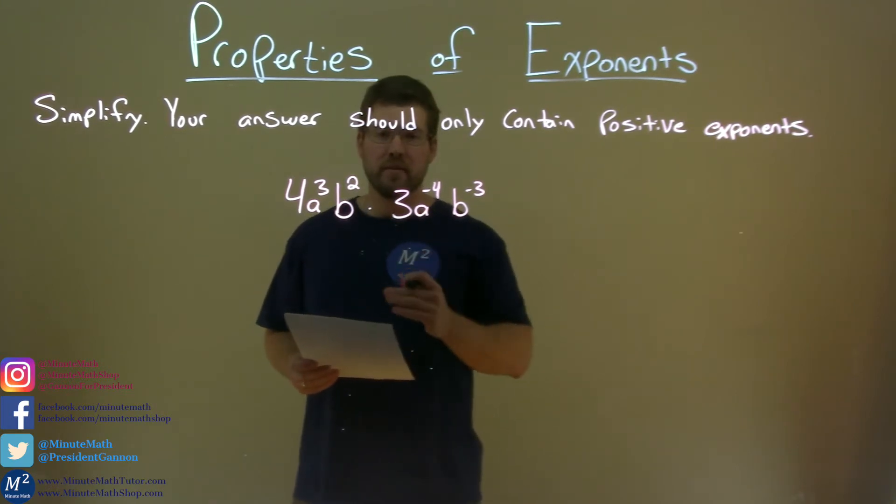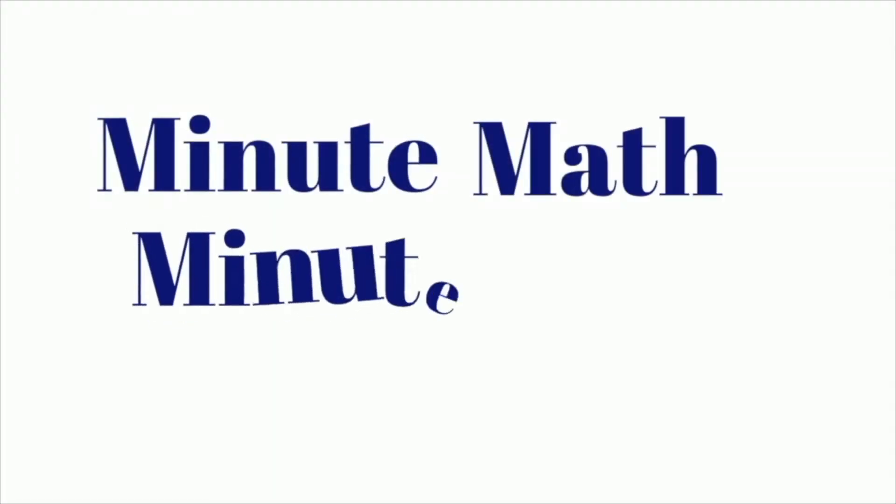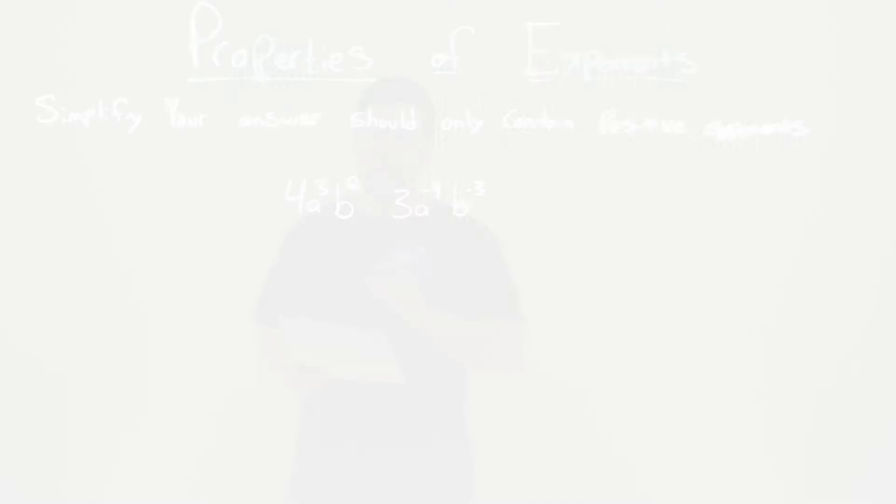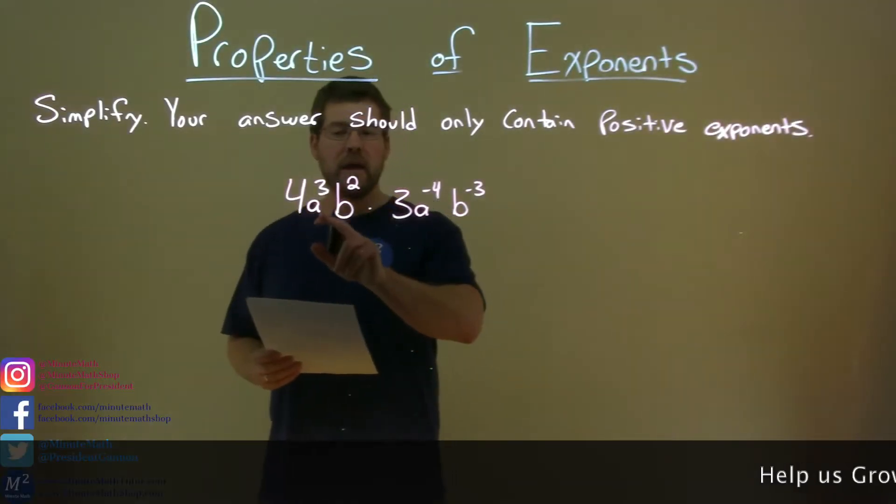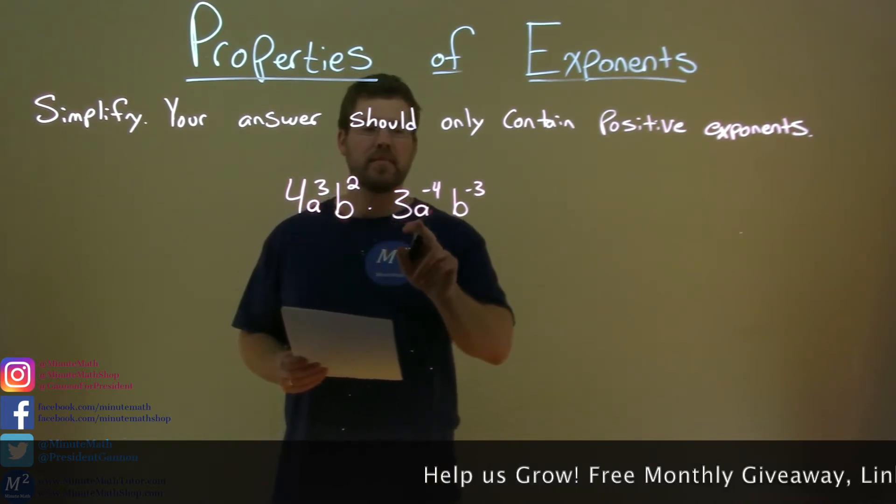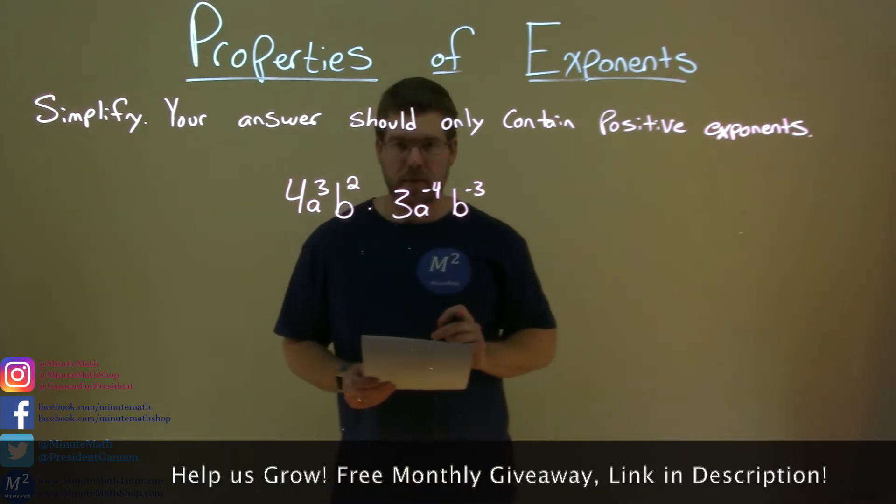If I was given this problem, we need to simplify 4a³b² times 3a⁻⁴b⁻³.